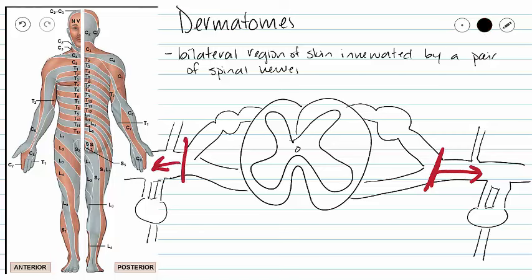When we say a bilateral region of skin, we mean the area innervated by one pair of spinal nerves. On our picture, we can see this area called T5.